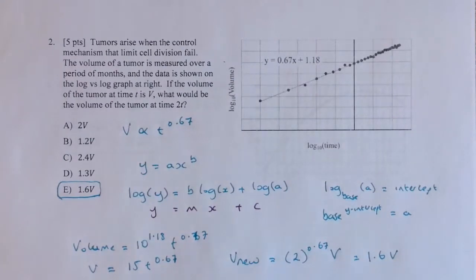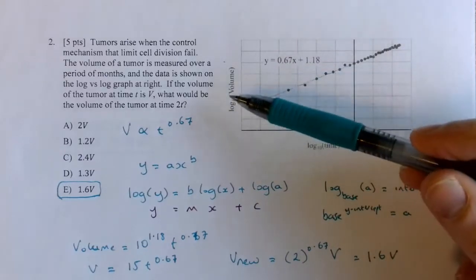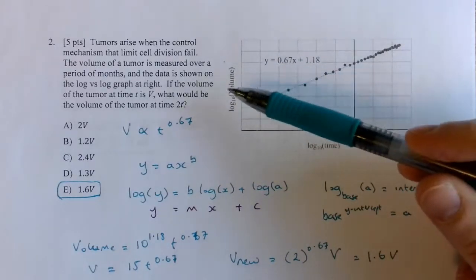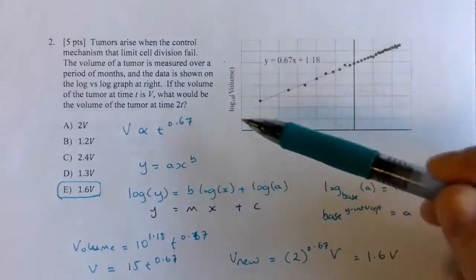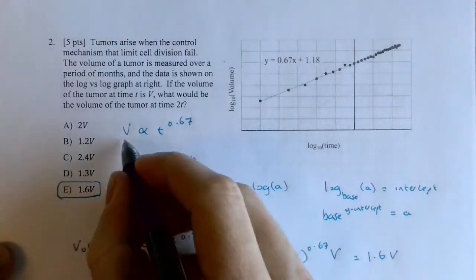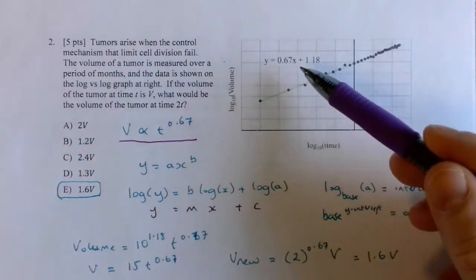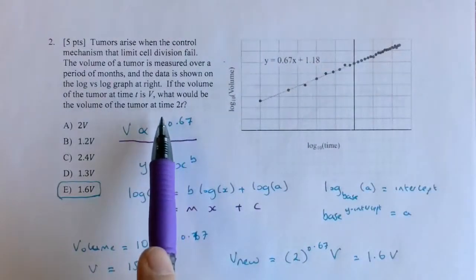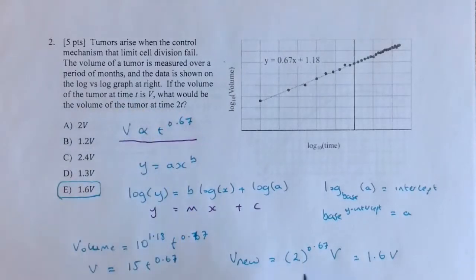So the key to the question is recognizing that the slope of the log-log plot tells you the power to which you raise the quantity on the x-axis. This linear log-log plot tells us that the volume scales with time to the 0.67 power. So if you're given the change by what factor the time changes, which in this case is doubled, then the volume will scale to that scaling factor of 2 raised to that fixed power, which gives us the 1.6v.